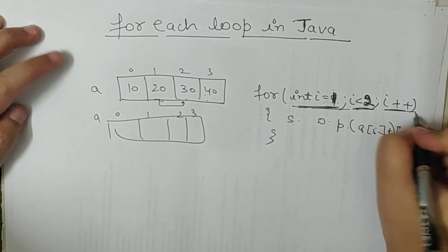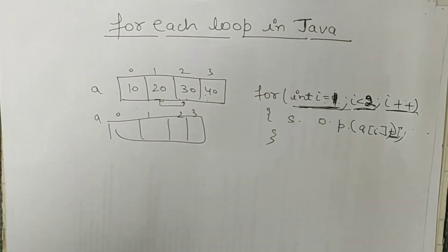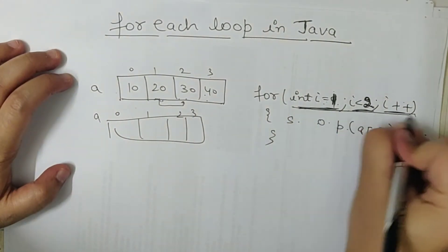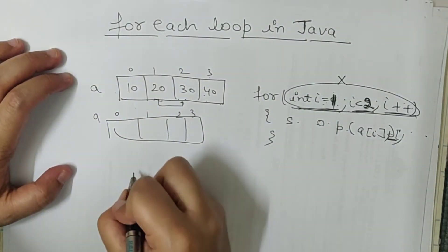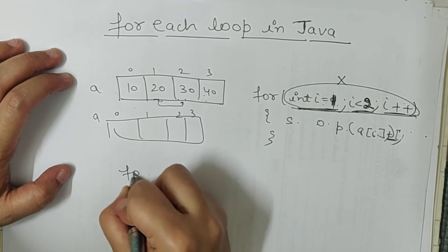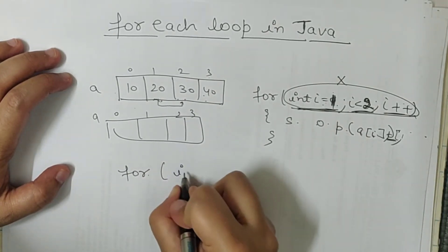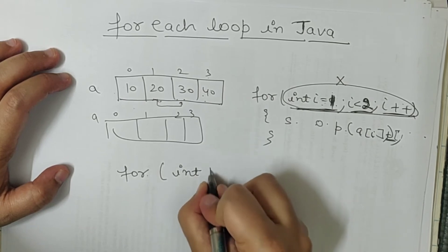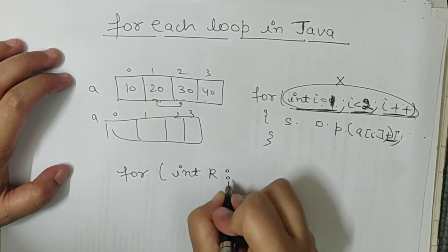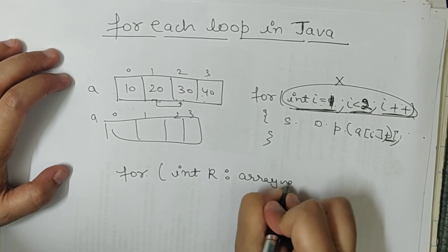Kuch bhi kar sakte hain for loop ke saath because we have initialization, we have condition, and we have increment. Ab dekhte hain for-each loop kaise different hai for loop se. For loop mein ye teeno cheezein nahi hoti hain. For-each loop ko hum likhte hain: 'for', phir data type, koi variable, colon, aur array ka naam.